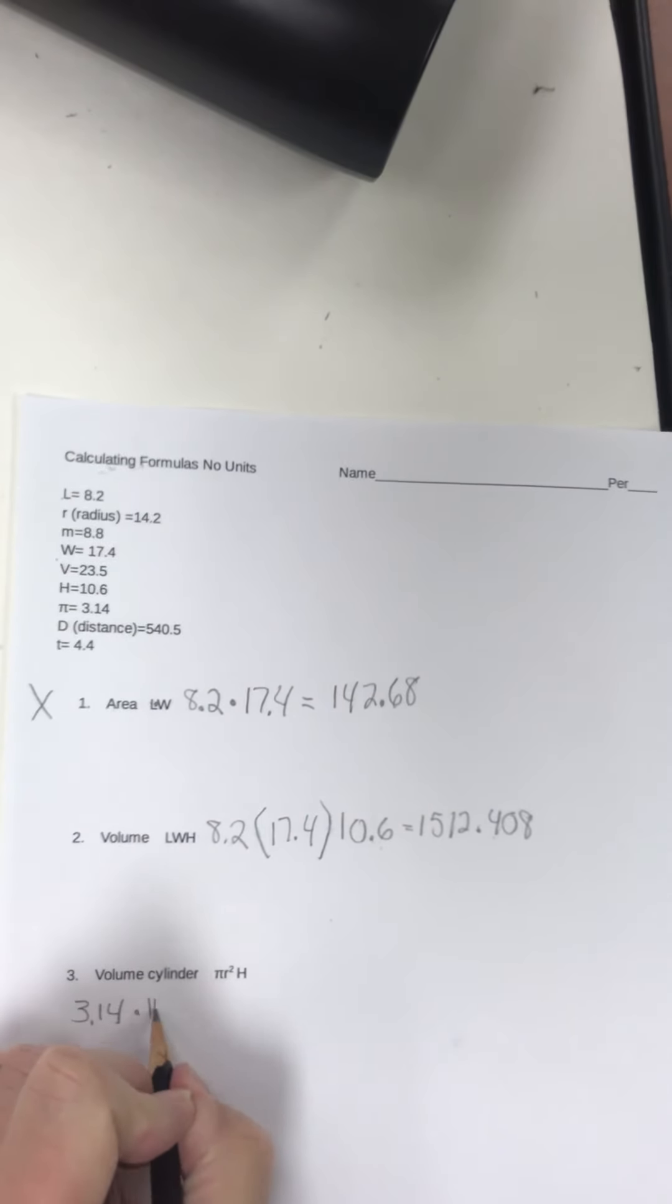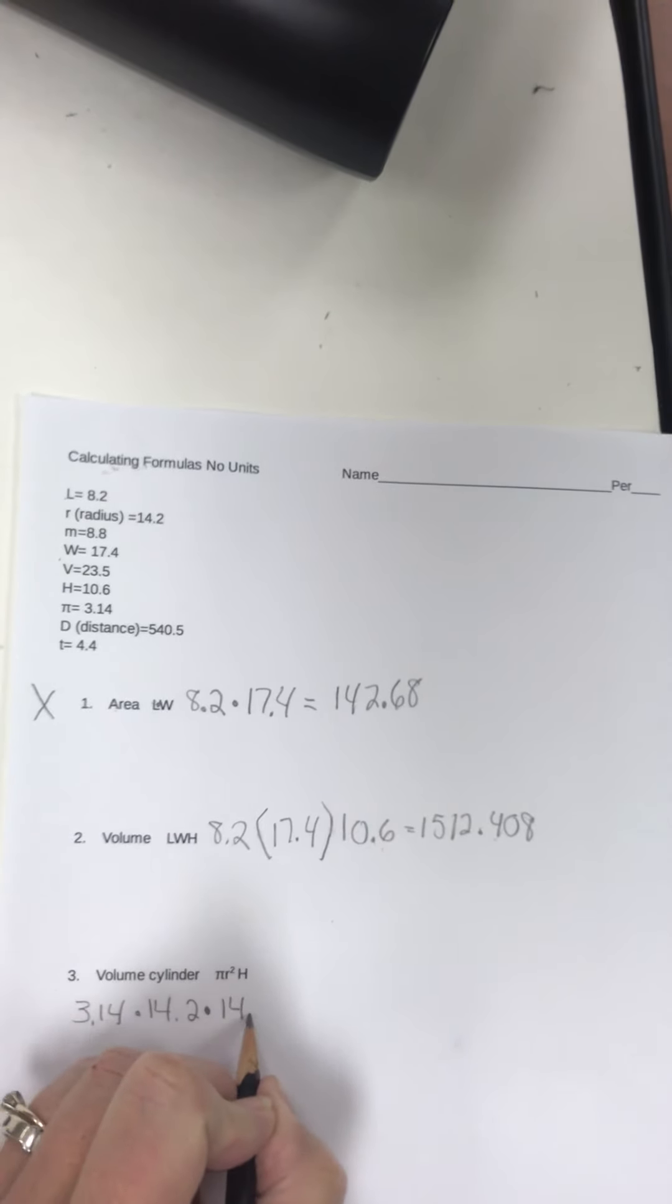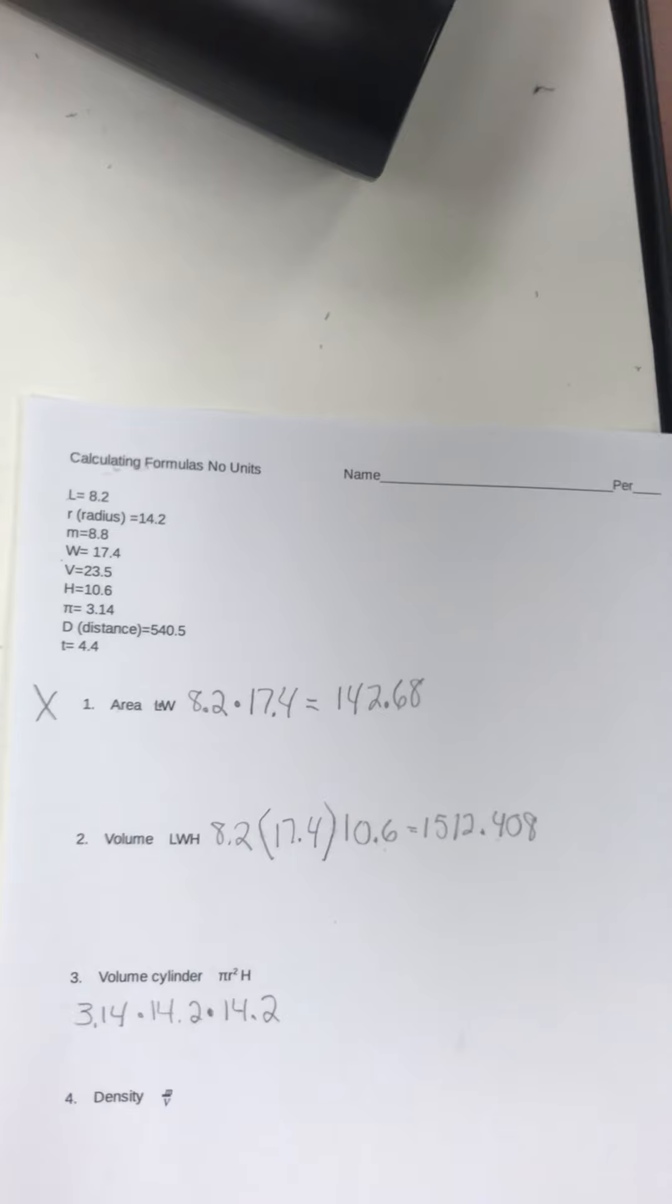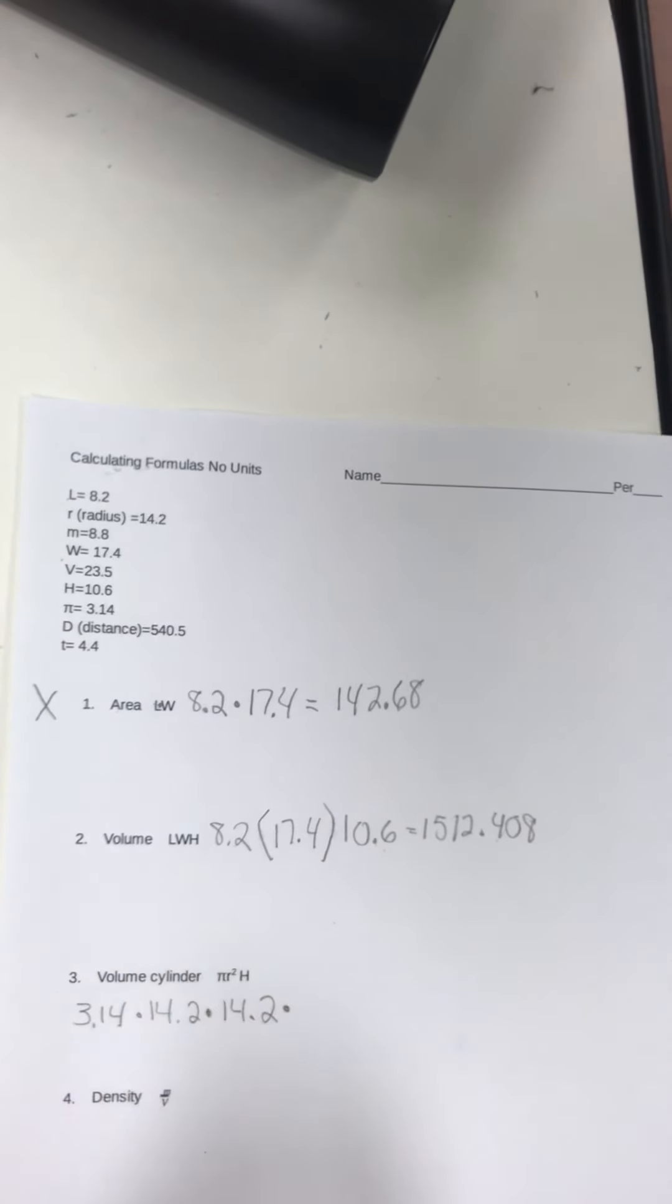So 3.14 times radius. Radius is 14.2. Notice it says radius squared. Well, squared means you have to write that out twice. Note that 14.2 squared is not 14.2 times 2. It's 14.2 times 14.2. So you have to write it out twice. Later when we do units, you'll see why that's beneficial. It seems like a waste of time right now, but when you get labels on there, or units on there, you'll know. So H is 10.6.